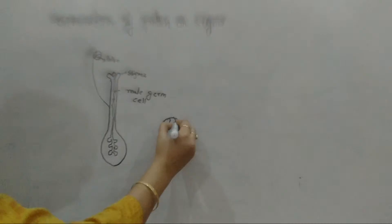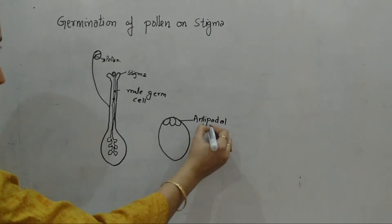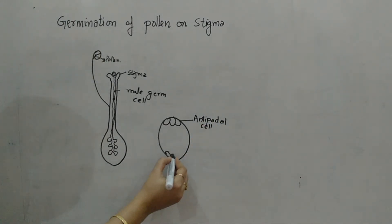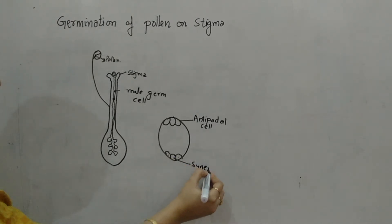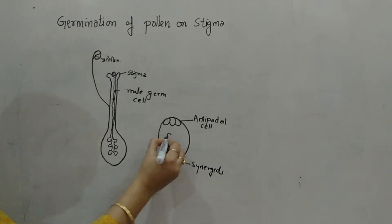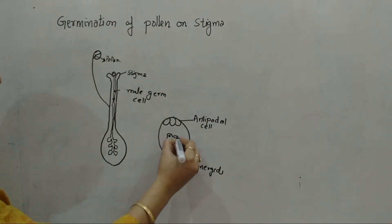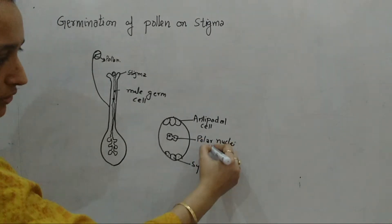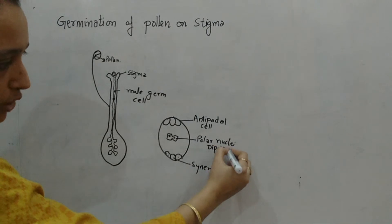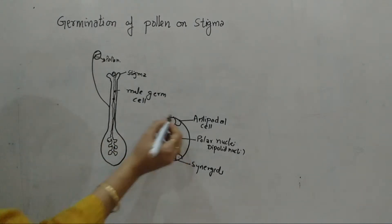The ovule contains a pair of cells at the top known as the antipodal cells. There are also cells known as the synergids. Inside there is a fused nuclei which is the polar or diploid nuclei — this is two in number and is known as the polar nuclei, or diploid nuclei. This ovule is shown in the expanded form.